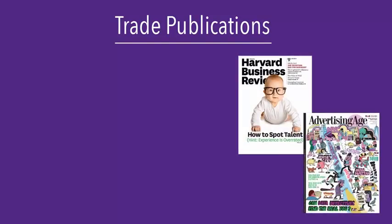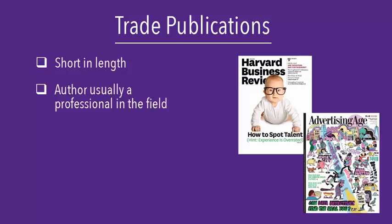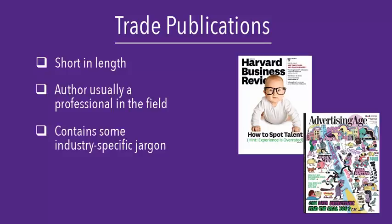Trade publications sometimes look like magazines, but they contain different content. Articles in trade publications may still be fairly short, but they are written by professionals and for professionals in a specific field. There will be some industry-specific jargon in the articles.